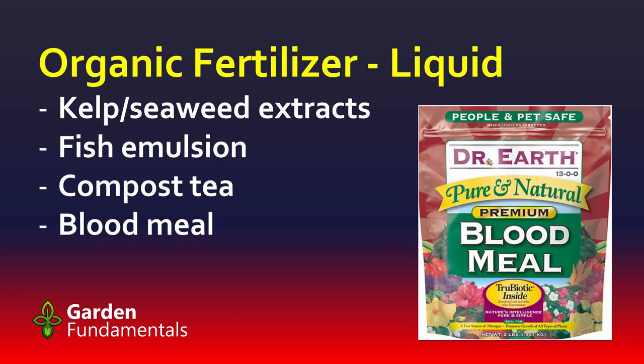There's a second group of organic fertilizers which I will call liquid. These include things like kelp and seaweed extracts, fish emulsion, and compost tea. I've also added blood meal to this list — it's not really a liquid, but in some ways it acts more like a liquid organic fertilizer. Liquid organic fertilizers are characterized by the fact that when you buy these materials, you're basically buying water with a very small amount of organic fertilizer in them, and many of these are highly processed. For example, fish emulsion is made by digesting fish with various chemicals — you're getting mostly water with some nutrients.